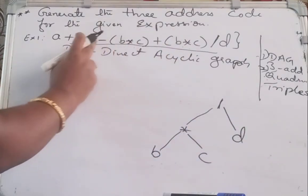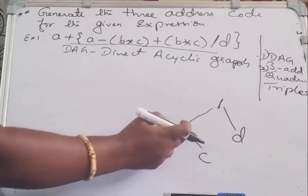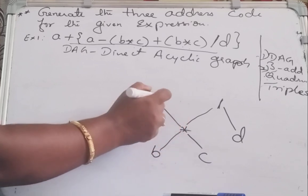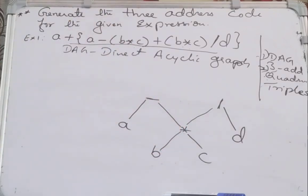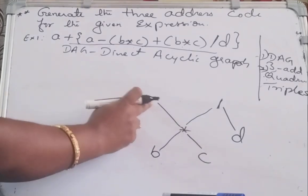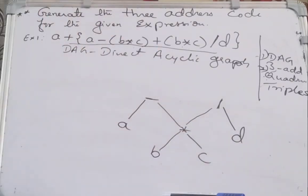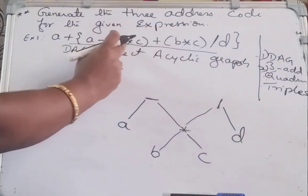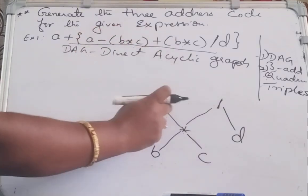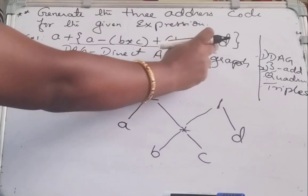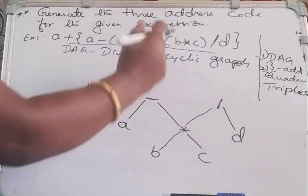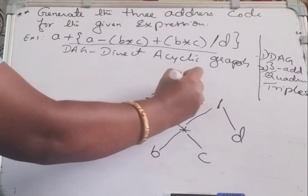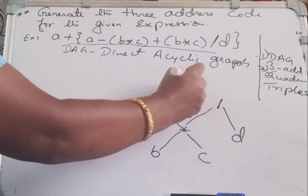Next we have B star C. A minus B star C — B star C is already there, so I am adding one more node for the minus operator, giving A minus B star C. Then next in this expression we have A minus B star C plus B star C slash D — this plus this I have to do now, so I am adding a plus node.